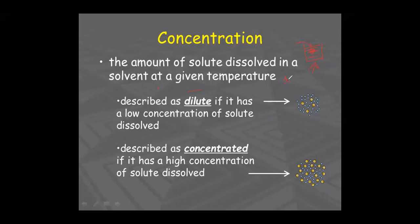Dilute means low concentration. In the laboratory, we use dilute acids and concentrated acids. Dilute hydrochloric acid means you have added some amount of water to it. The purest form, without adding water, is called concentrated acid, which is much stronger than diluted acid.